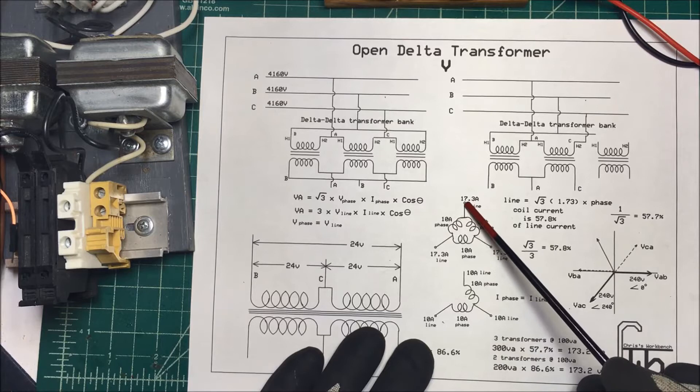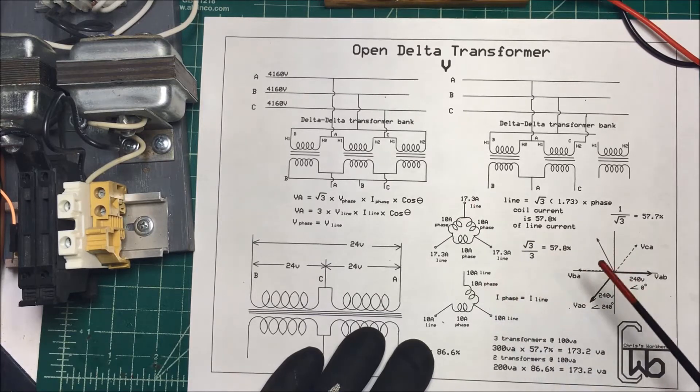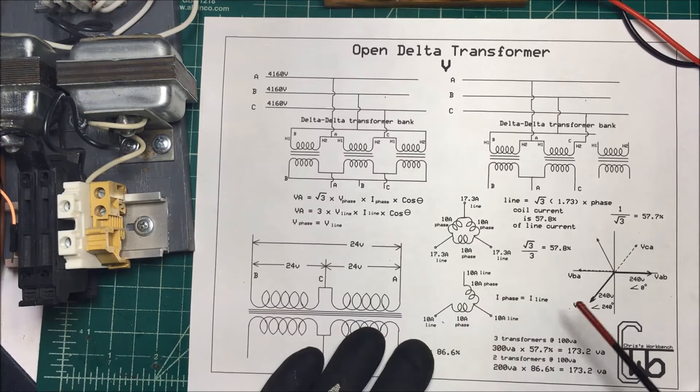These don't add up to make our 17 amps anymore. But we have A, B, and C here. Now, how do we get our three phases out of here?